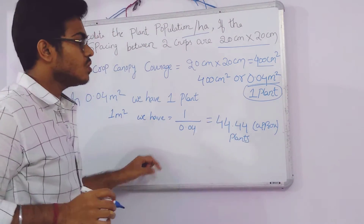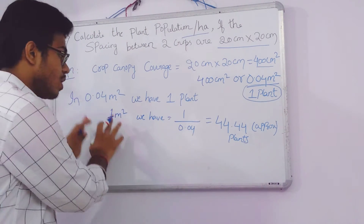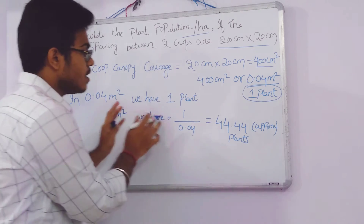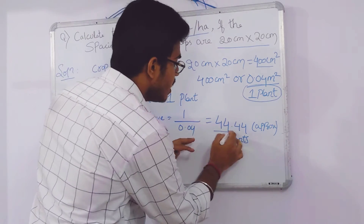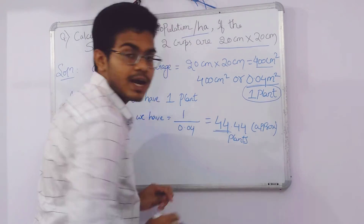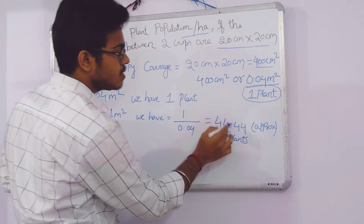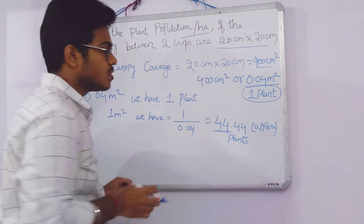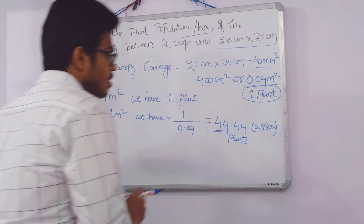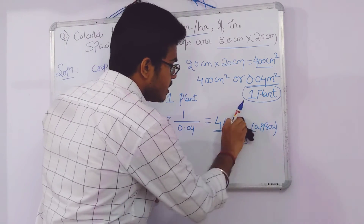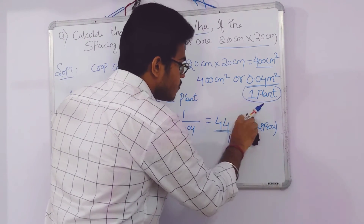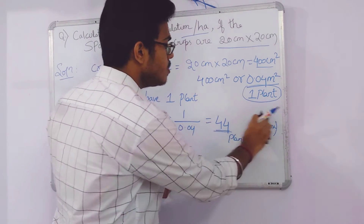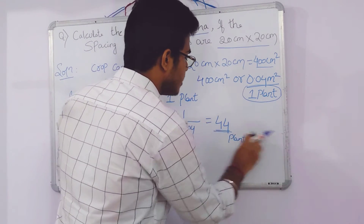We have found that in one meter square we have 44 plants. We can ignore the 0.44, so it is 44 plants per meter square.